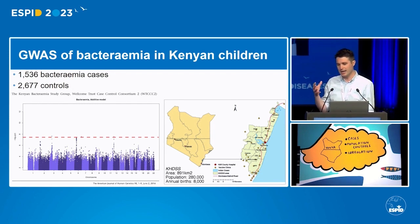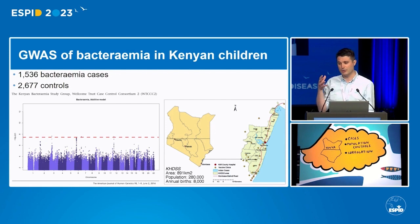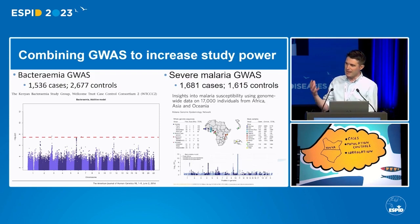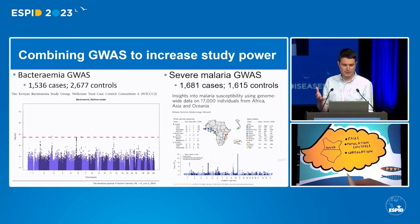We had a few loci that looked very promising, but when we tried to replicate those in independent sample collections, we weren't able to — so we weren't able to find anything reproducible. You can imagine that's for a number of reasons, but almost certainly the most important was simply that we didn't have enough children in that original scan.